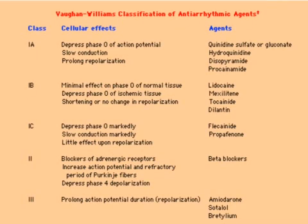Here is a classification table of the drugs discussed. Look at classes 1A, 1B, 1C, 2, 3, and 4. Class 4 calcium channel blockers decrease phase 0 and phase 4. Look at the important drugs: procainamide, beta blockers, amiodarone, and sotalol are very important to know. Try to memorize these things. Thank you so much for watching — take care.